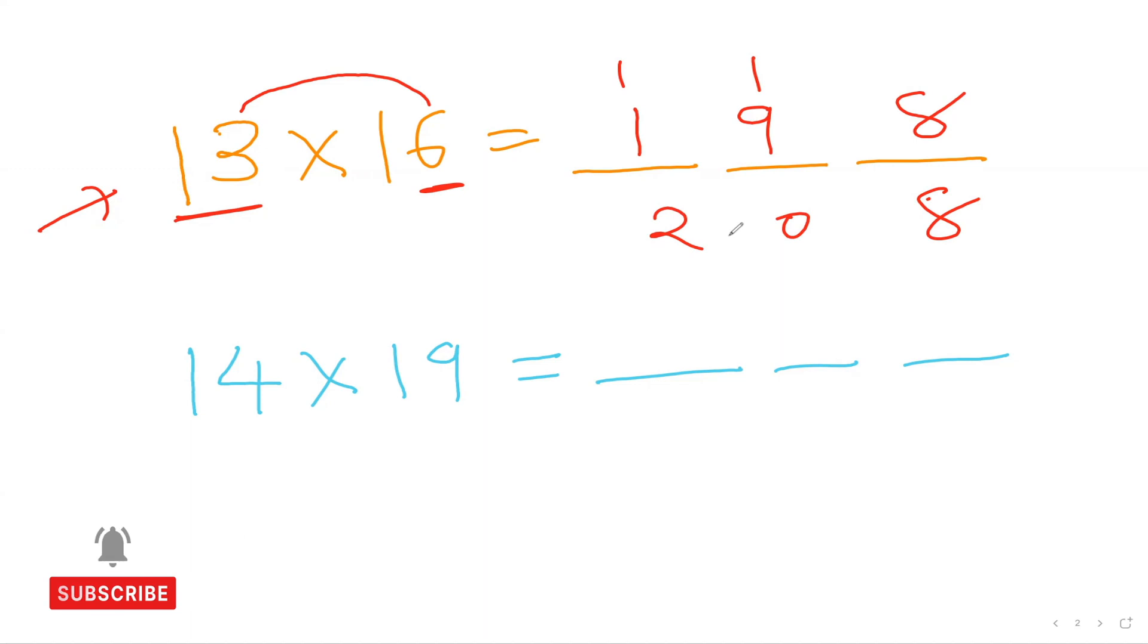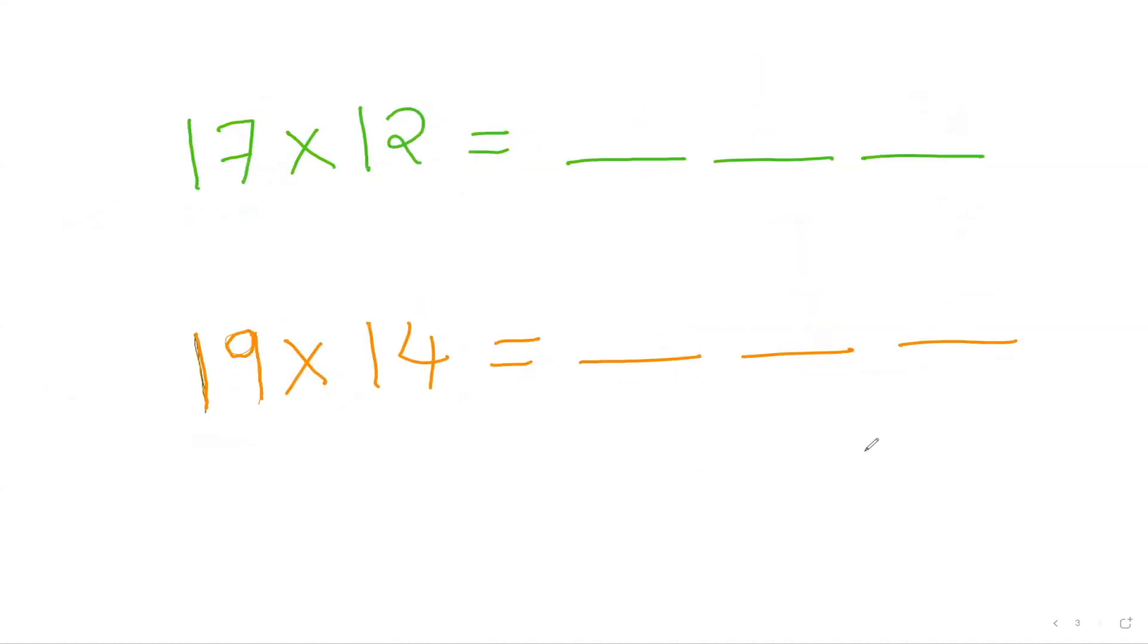Now let us say if I want to do my next question like 14 times 19. Then I can simply 14 plus 9. So 14 plus 9 is going to be 23. So I'm going to put down 23. And then 4 times 9 is 36. So put down 6 here and 3 as a carry which will be 266. How quick. Now I think you are realizing the speed of this, isn't it.